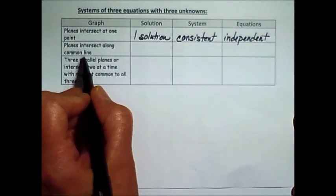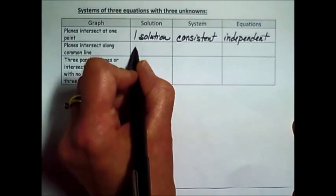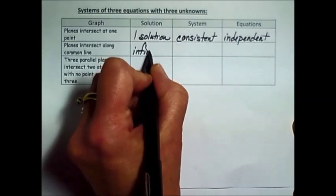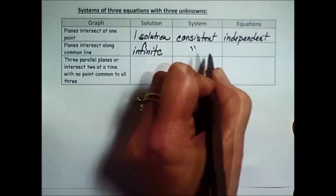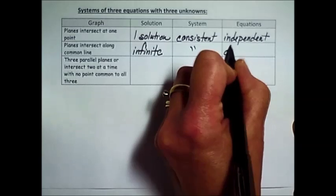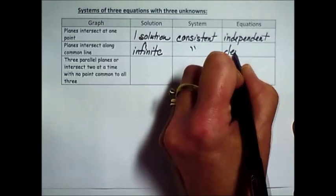Planes that intersect along a common line have an infinite number of solutions. They are consistent, but in terms of the equations, they are dependent.